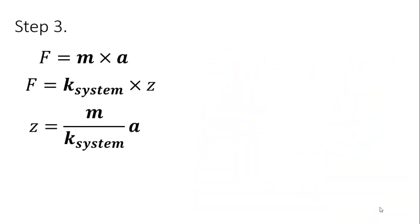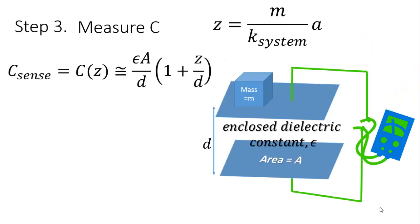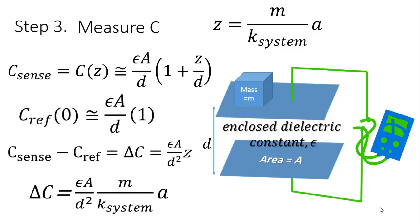With a spring mass system in place, we need to measure displacements. The most common method uses capacitance. To make the math simple, let's just look at small displacements. The difference between the accelerometer capacitance and its value at zero acceleration is proportional to the displacement, which is in turn proportional to the acceleration.